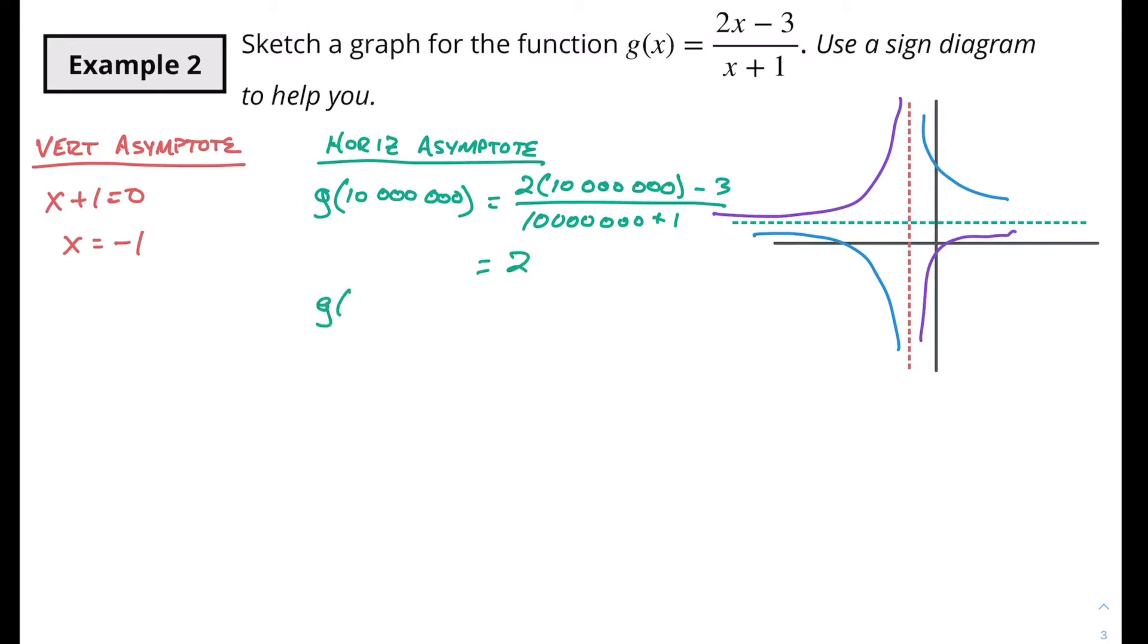And if I did the same thing for a negative 10 million I'm gonna get roughly the same idea. 2 times negative 10 million minus 3 over a negative 10 million plus 1. Again I'm gonna be getting a negative number over another negative number which will simplify to a positive number which is gonna be approaching positive 2 from the negative direction. So we're in roughly the right spot.